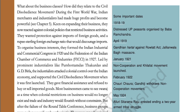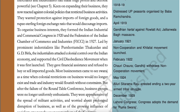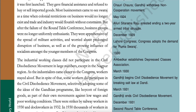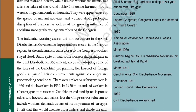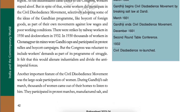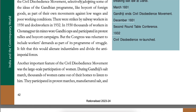Some important dates: 1918-19, distressed UP peasants organized by Baba Ram Chandra. April 1919, Gandhian Hartal against Rowlatt Act and Jallianwala Bagh Massacre. January 1921, non-cooperation and Khilafat movement launched. February 1922, Chauri Chaura — Gandhiji withdraws non-cooperation movement. May 1924, Alluri Sitaram Raju arrested, ending a two-year armed tribal struggle. December 1929, Lahore Congress — Congress adopts the demand for Poorna Swaraj. 1930, Ambedkar establishes Depressed Classes Association. March 1930, Gandhiji begins civil disobedience movement by breaking salt law at Dandi. March 1931, Gandhiji ends civil disobedience movement. December 1931, Second Roundtable Conference. 1932, civil disobedience relaunched.